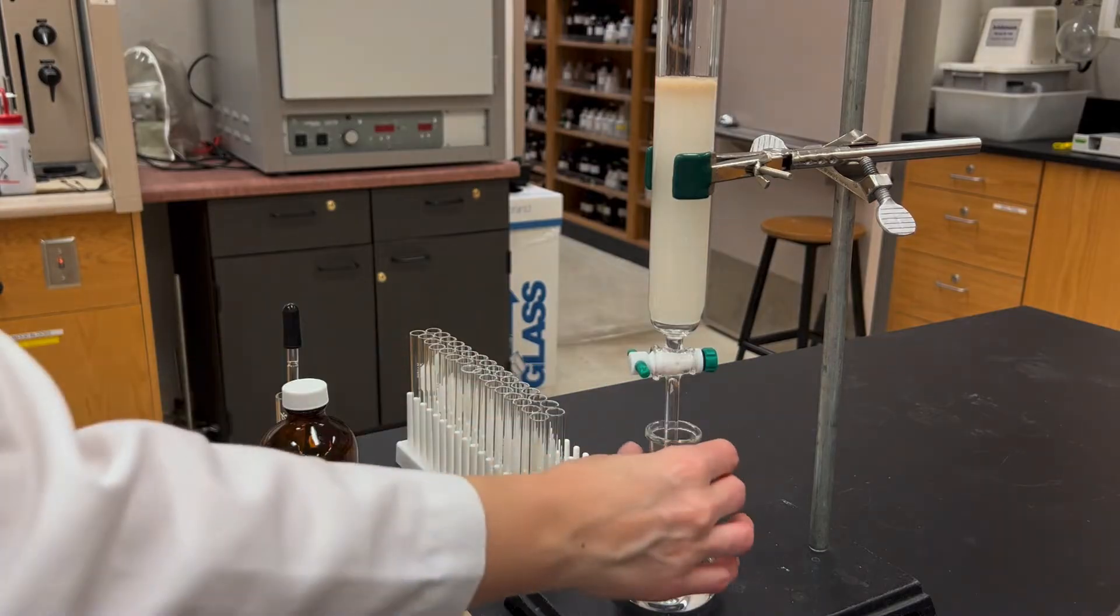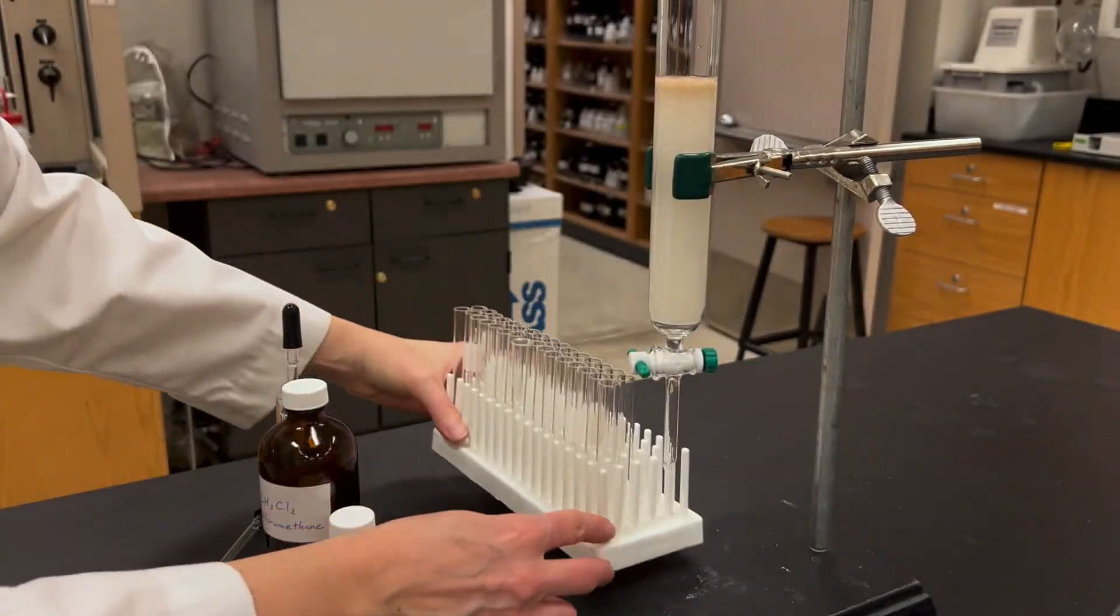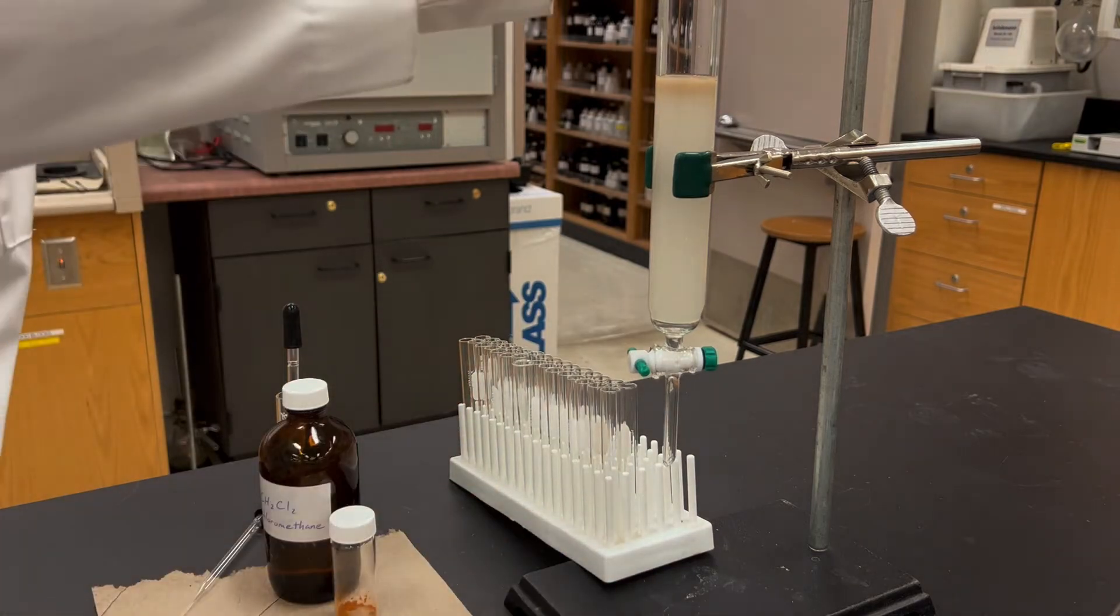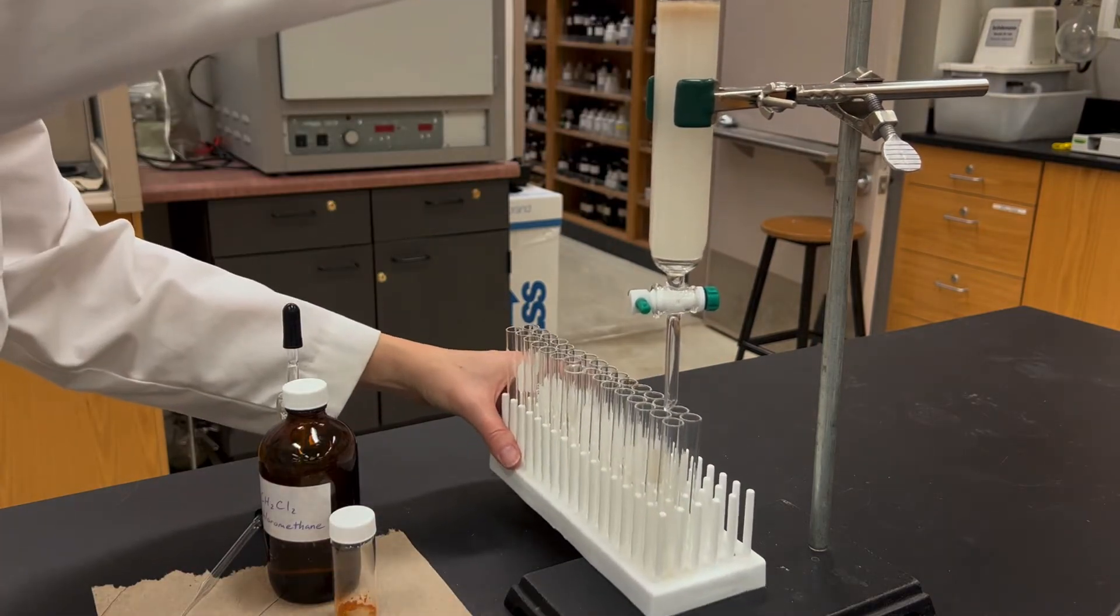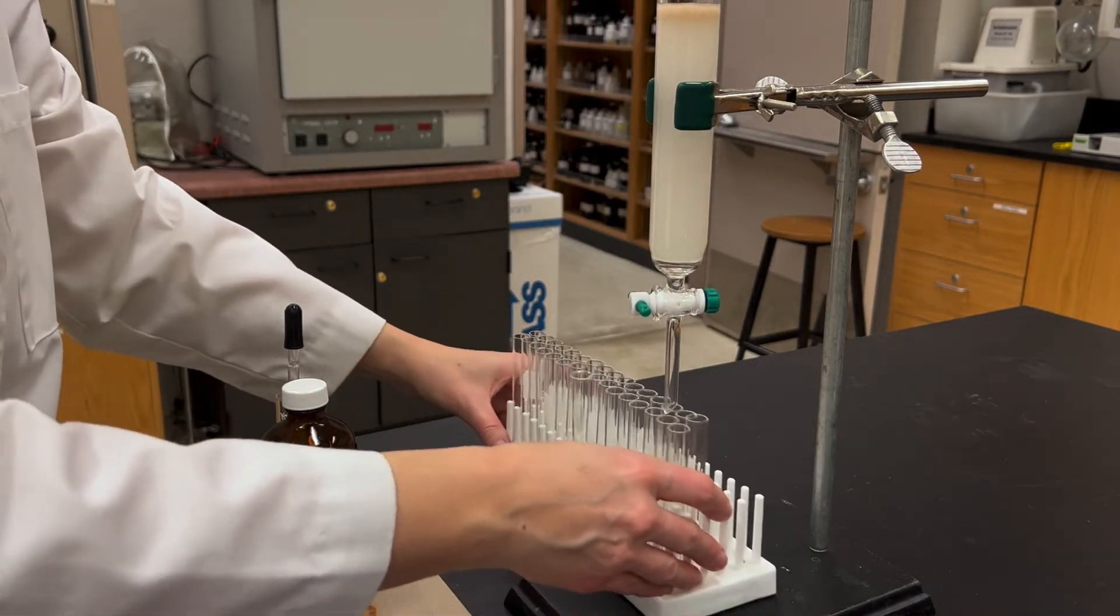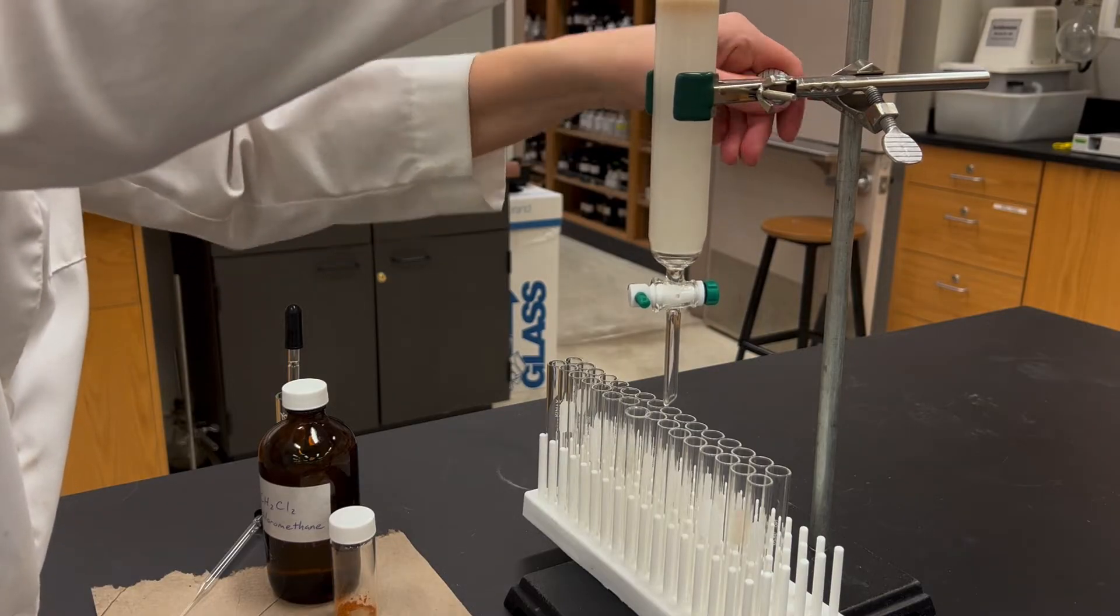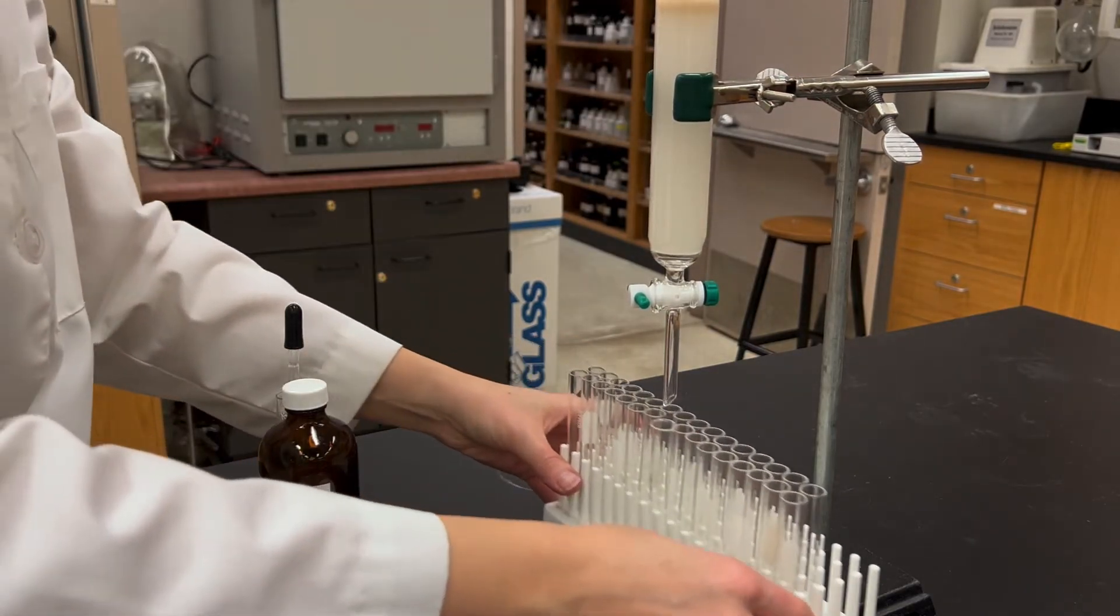I'm going to collect fractions from the column so I want to prepare for that next. Fill a test tube rack up with some test tubes and then position that underneath the column and make sure there's space. You may need to raise the column up, but then put the test tube rack and move it left to right and make sure that it's not going to bump the tip of the column at any point.